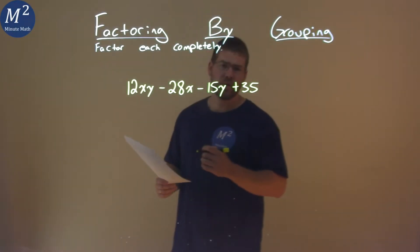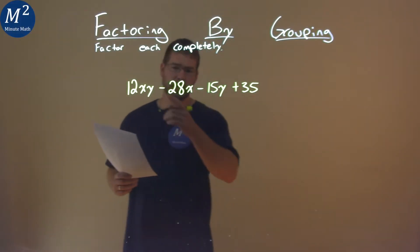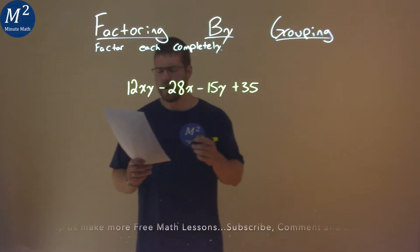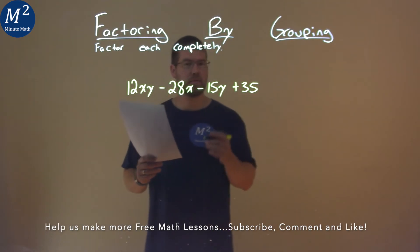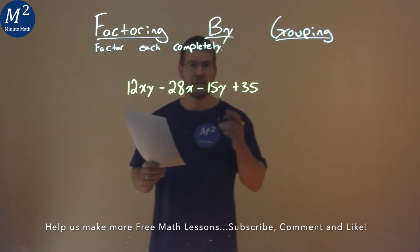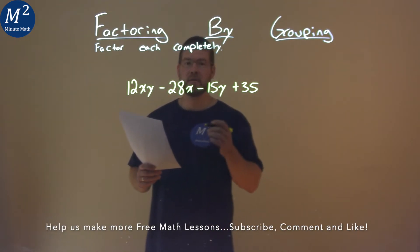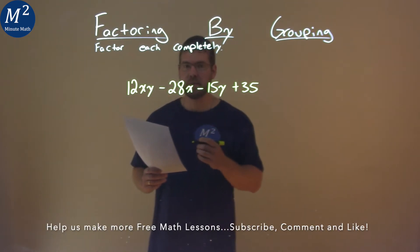We're given this problem right here: 12xy minus 28x minus 15y plus 35, and we need to factor this completely.